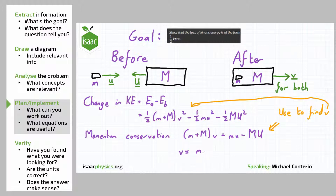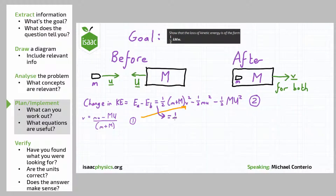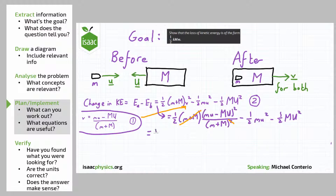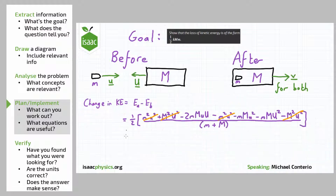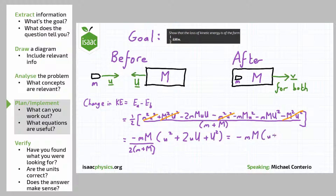We can then implement this, which gives us v equals (little m times little u minus capital M times capital U) all over (little m plus capital M). I can substitute this into the equation for the change in kinetic energy, so that it's purely in terms of the masses and initial speeds. What we have now is technically the answer, but in this format it's very hard to understand anything by looking at it, so we expand and simplify. As well as cancelling where we can, we make sure the denominator of all terms is the same so we can combine them. At the end of the simplification, we notice that the term in brackets in the numerator is just the sum of the speeds squared.